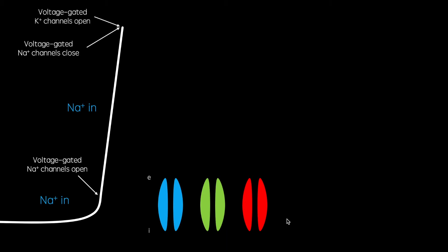When this sodium influx depolarizes the cell membrane sufficiently at around minus 70 millivolts, voltage-gated sodium channels open causing a marked influx of sodium. When the cell depolarizes to around plus 20 millivolts, voltage-gated sodium channels close and voltage-gated potassium channels open.